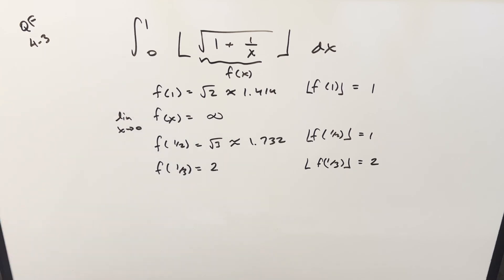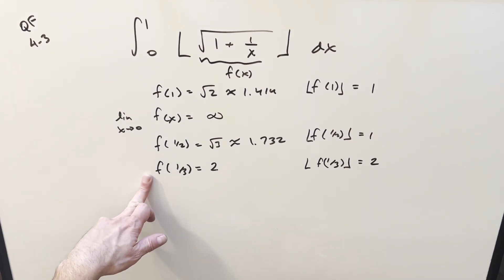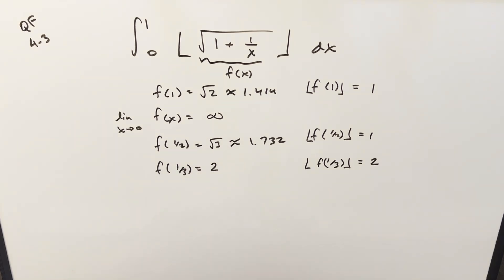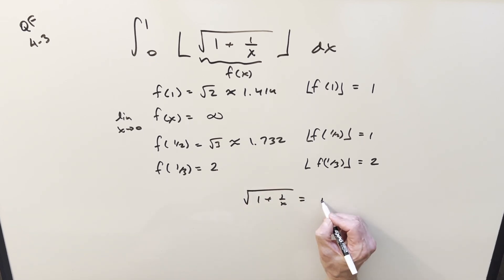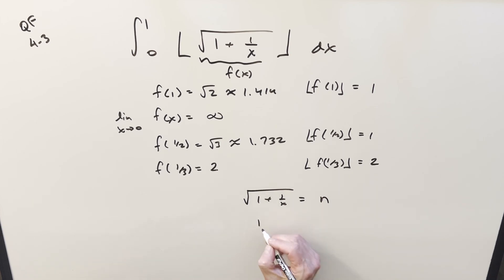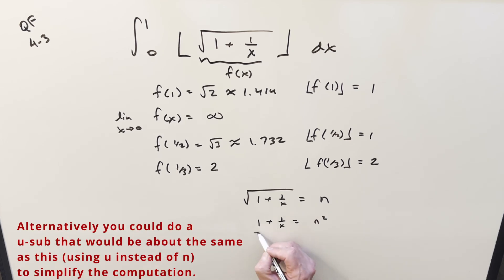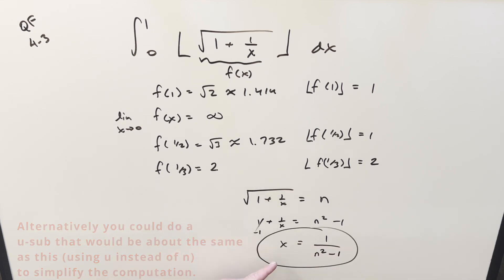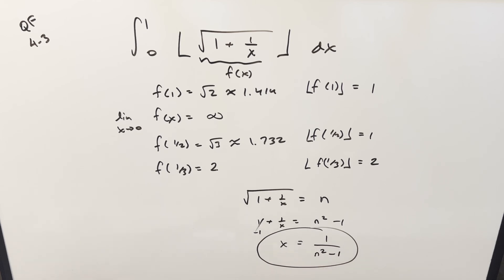To find a nice way to break up this integral, I need to find the integer values — the change points, like 1 third. What we can do is set the square root of 1 plus 1 over x equal to some integer n, then solve for x. Squaring both sides gives 1 plus 1 over x equals n squared. Subtracting 1 and taking the reciprocal gives x equals 1 over n squared minus 1.